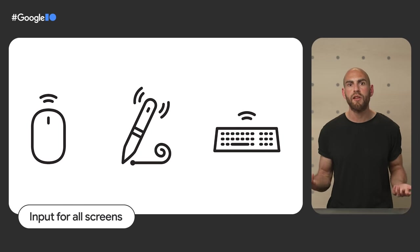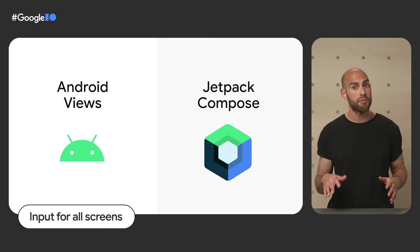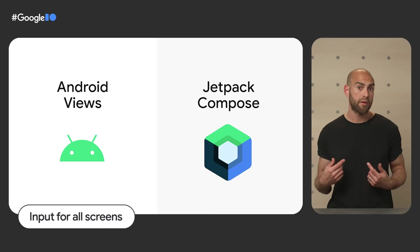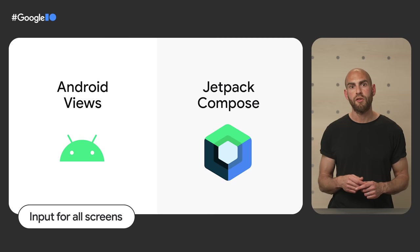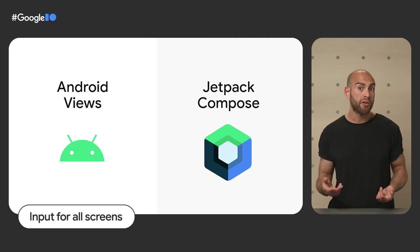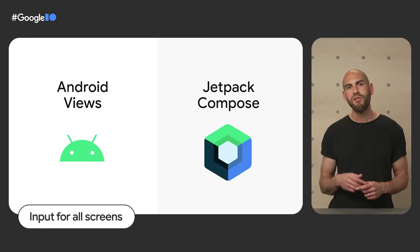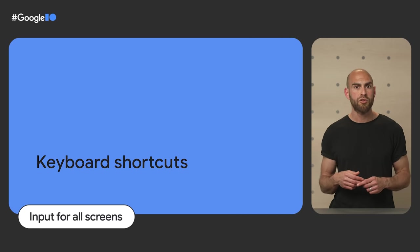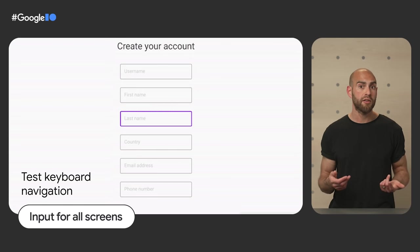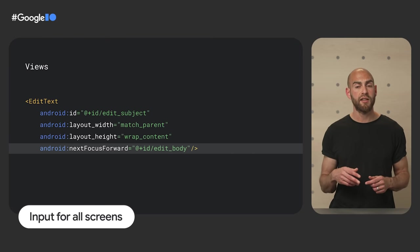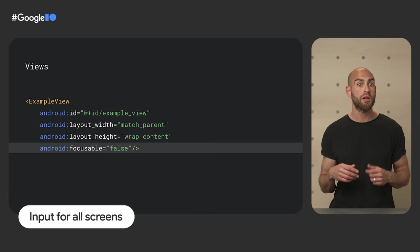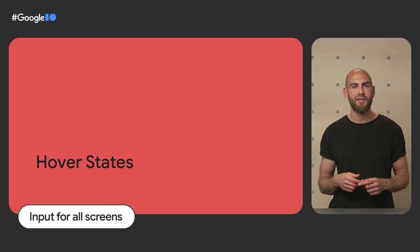When building for large screens, consider how users will interact with your app — they may use a keyboard, mouse, trackpad, or stylus. Both Views and Compose 1.2 support clicks and scrolls with peripherals out of the box, but several use cases need attention: does your layout look good with virtual and physical keyboards? Is text selectable where expected? Consider implementing keyboard shortcuts, arrow key and tab navigation, ensuring interactive elements are focusable in the right order, giving hover states to interactive elements, and testing with a stylus. 'Input for All Screens' shows you how.